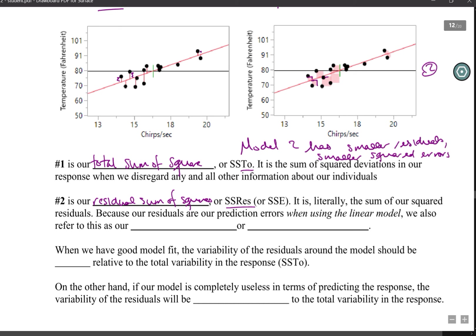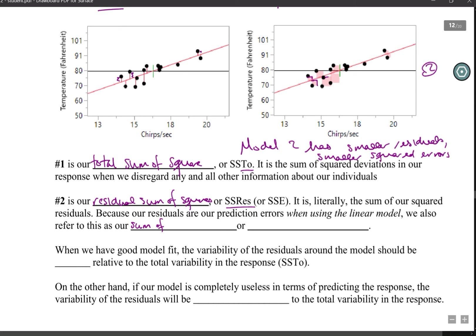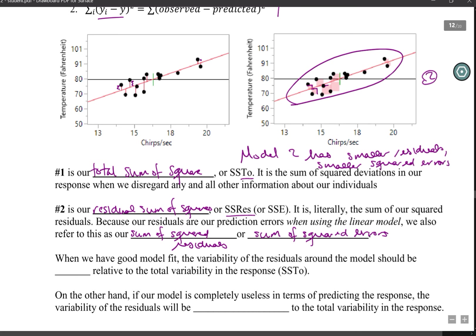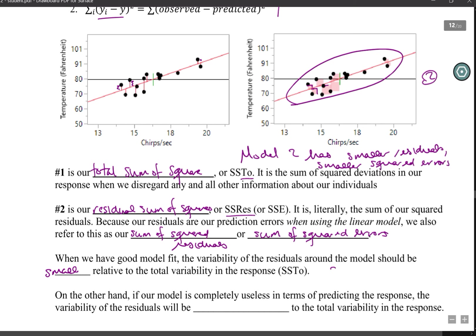Number two is our residual sum of squares, or SS Res — literally the sum of our squared residuals around our best fit line. Because our residuals are our prediction errors when we use the linear model, we refer to this as sum of squared residuals or sum of squared errors, SSE. If we have good model fit, because all of those squares are fairly small, we have a strong positive linear association. The variability of the residuals should be small relative to the total variability in the response, so SSE should be small compared to SS Total.